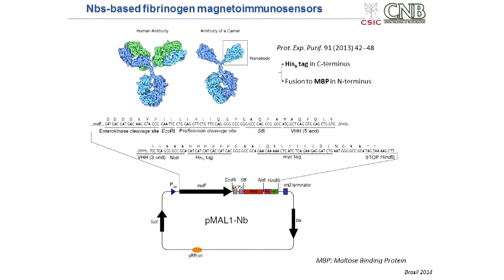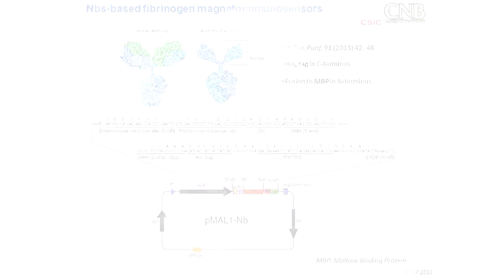For the first time, we prepared a nanobody selected for the specific detection of fibrinogen. We modified this nanobody with cis-histidine tags at the C-terminus and expressed it in E. coli, because it can be expressed in many bacteria, making it a relatively easy way to prepare these nanobodies.